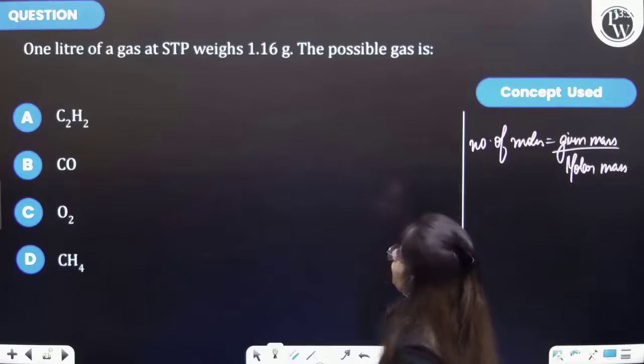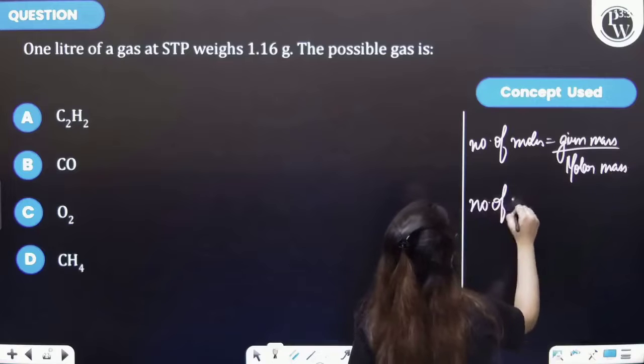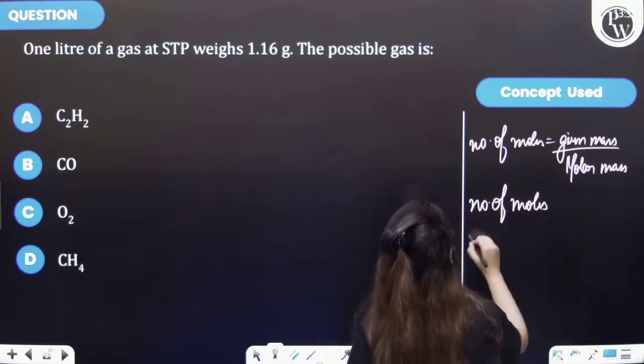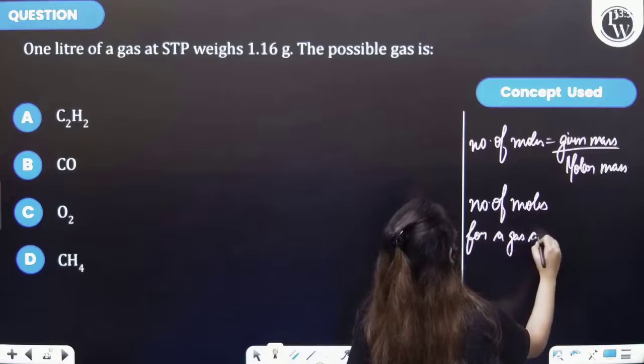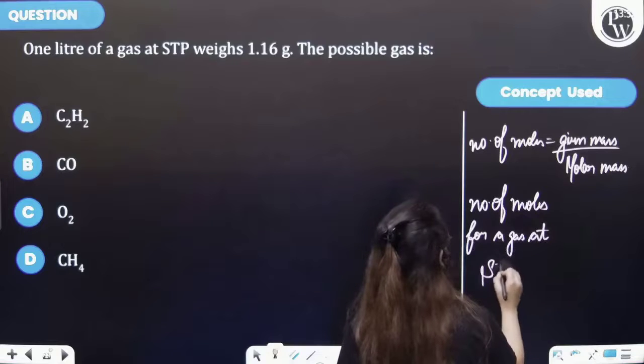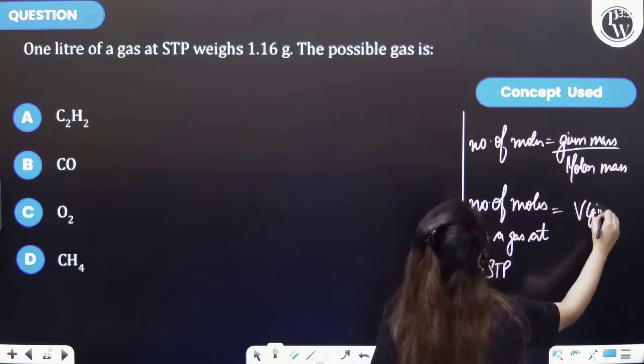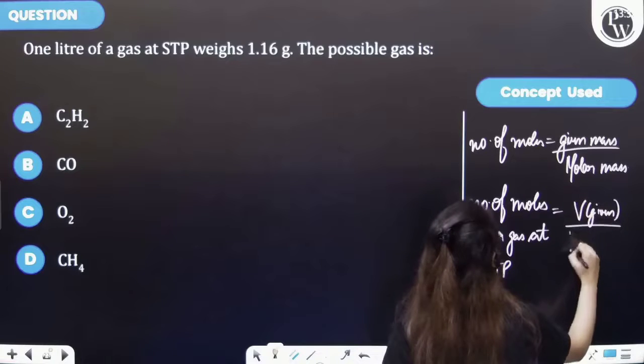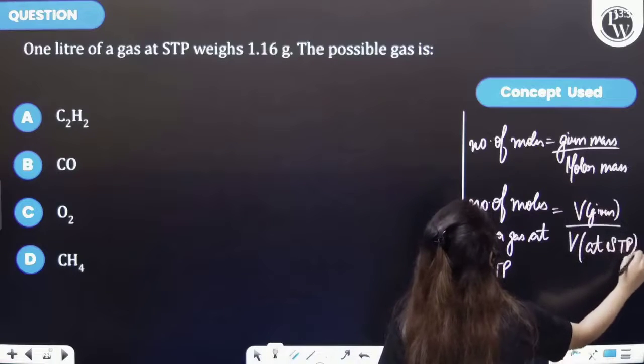Also this is a condition for a gas, and number of moles for a gas at STP is equal to volume given to you upon the volume at STP. Right?